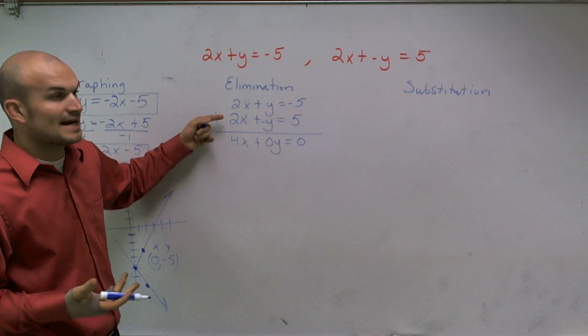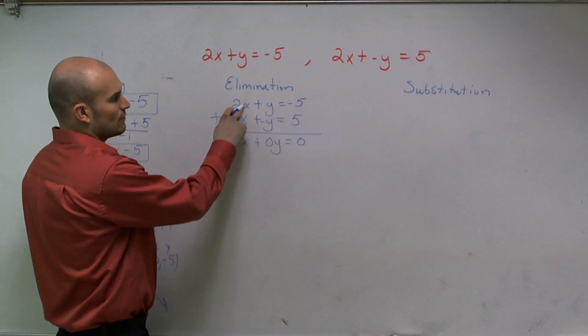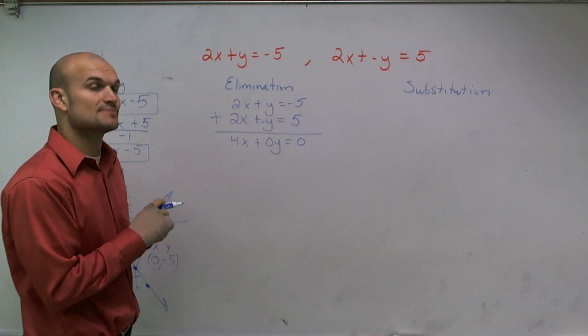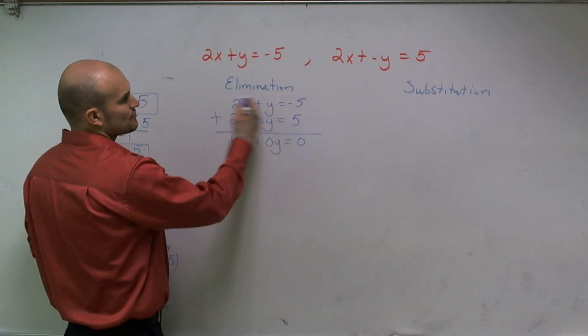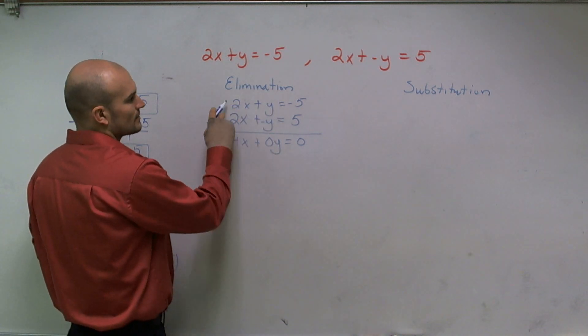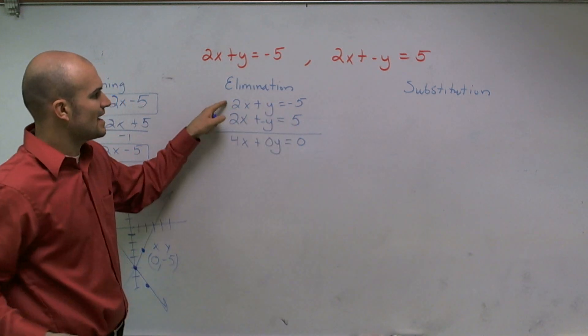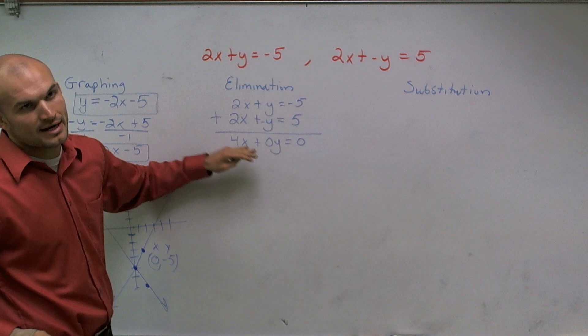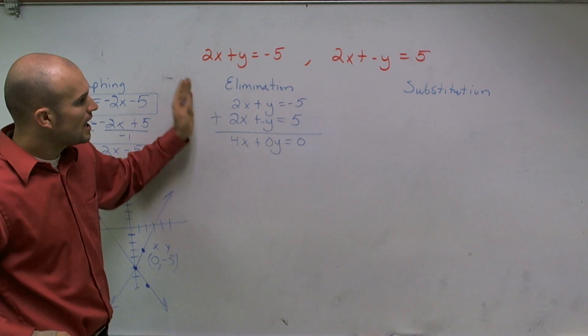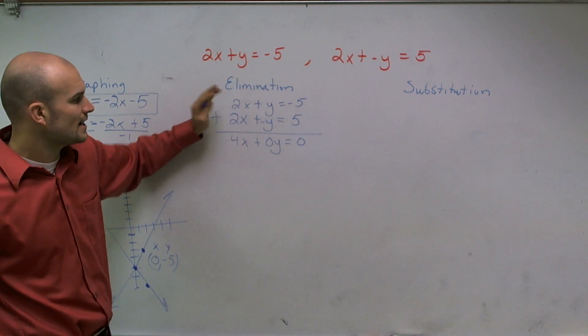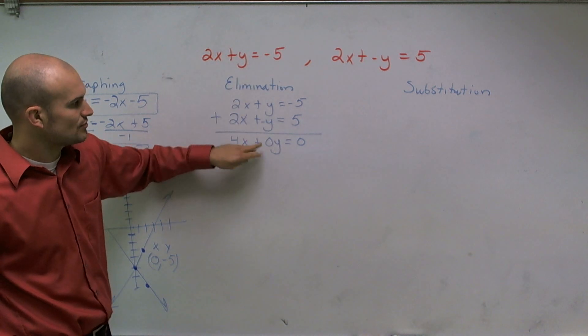If you wanted to eliminate the x's, which you could, you'd have to make one of these x's, one of the two x's negative. So you'd have to multiply one of these rows by everything. You'd have to multiply one of the equations by negative 1, meaning you'd make every single term negative and then you could add the two equations. However, here, it's already simply put for our y, so I'll just add these two up.